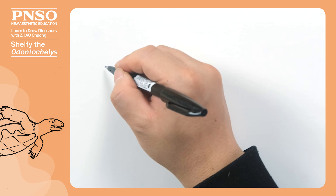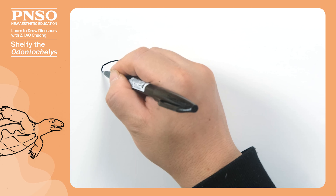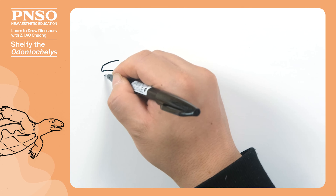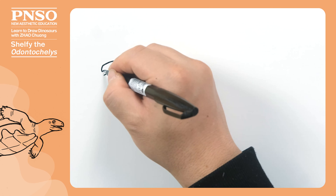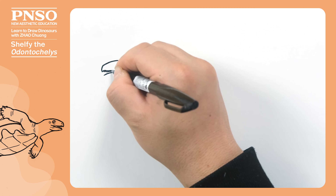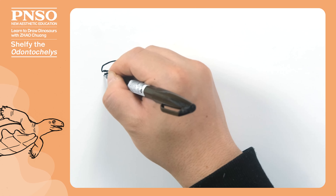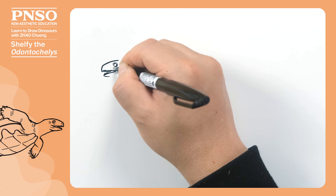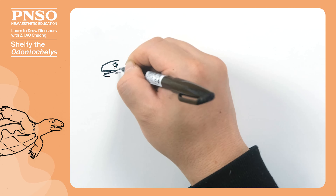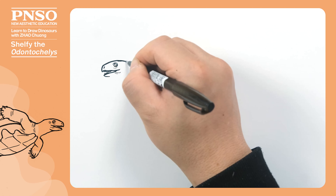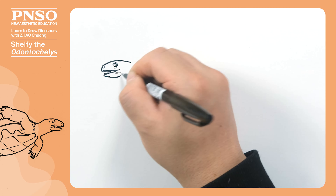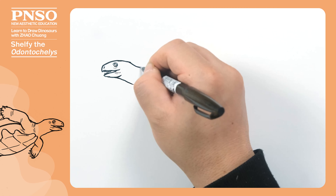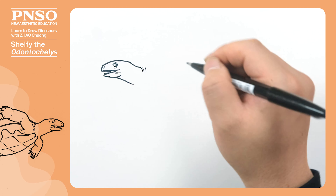We first draw the head of Odontocheles. Odontocheles had a relatively short head with a pointed mouth at the front. The mouth can be drawn slightly open to show the teeth inside. Its eyes nestled in the front. Above the corners of the mouth were its tiny nostrils. Like many turtles, it had a somewhat thick neck. We can draw some folds at the base of the neck.